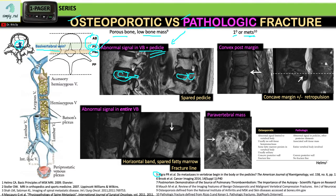The basivertebral vein is a tributary of Batson's plexus — longitudinal valveless veins. Because they are valveless, there is no protection against reflux. For example, a patient with cancer of the rectum or prostate, drained by the periprostatic venous plexus, can have drainage access to the internal iliac vein, which has a connection to Batson's venous plexus. From Batson's plexus, tumor cells can access the vertebrae.